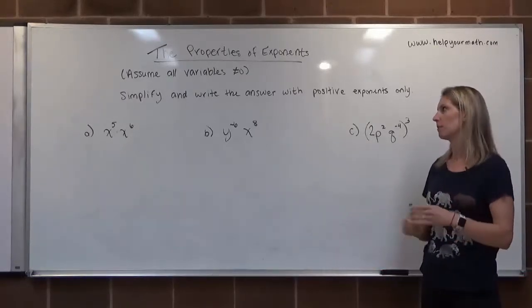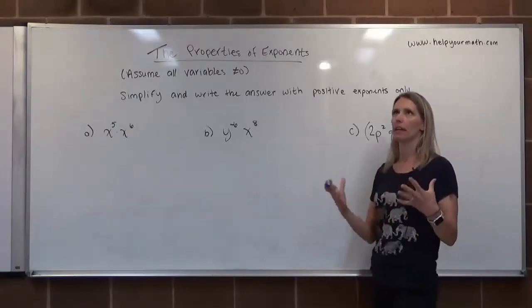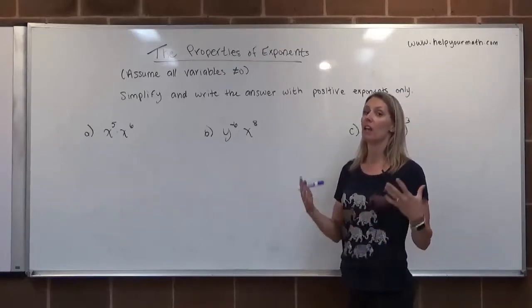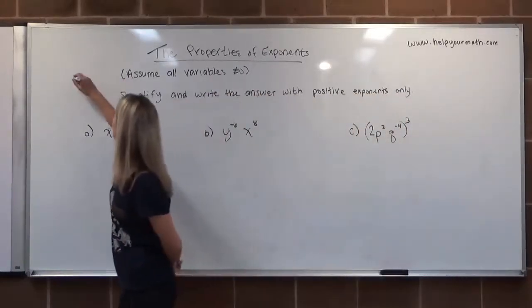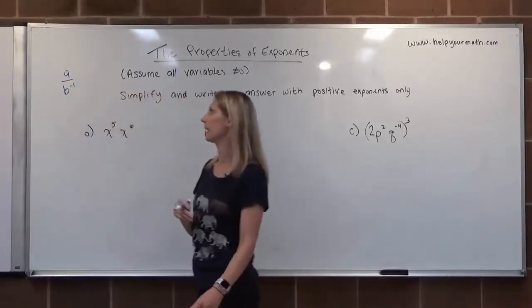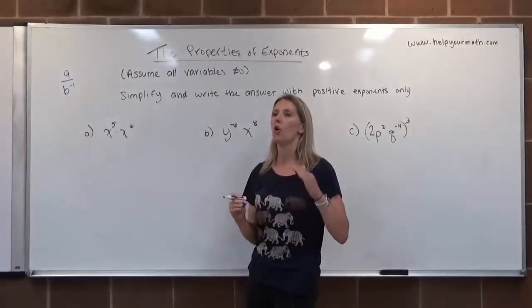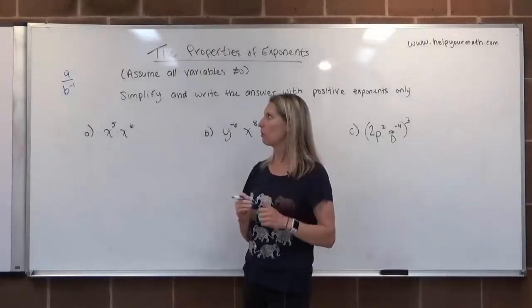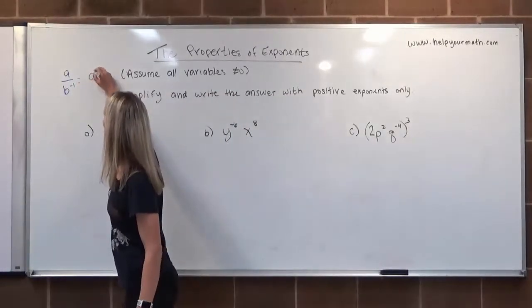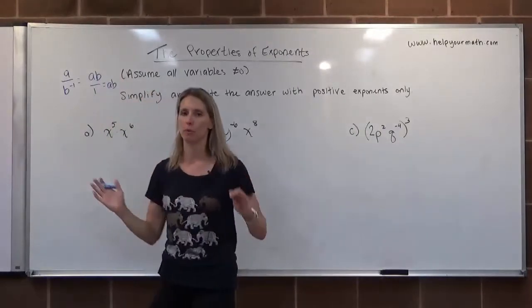Something I want to review, because I do see some negative exponents here. If we have a negative exponent, that indicates we want to take the reciprocal. If we're given a fraction — say A over B to the negative 1 — a negative exponent in the denominator becomes positive if we move it to the numerator. Moving it up would give us AB over 1, which is just AB.